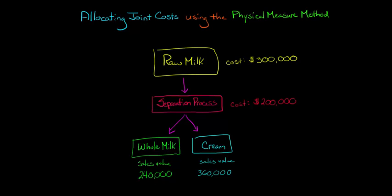In this video, we're going to talk about how we can allocate joint costs to products by using the physical measure method. Let's say that we have a dairy farm and we produce some raw milk at a cost of $300,000, and then we have a separation process that costs $200,000, and it gives us two joint products: whole milk and cream.